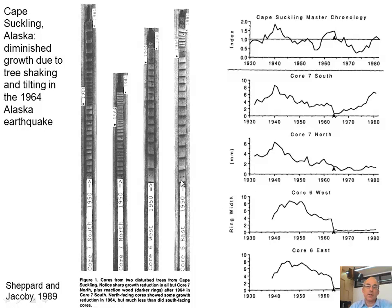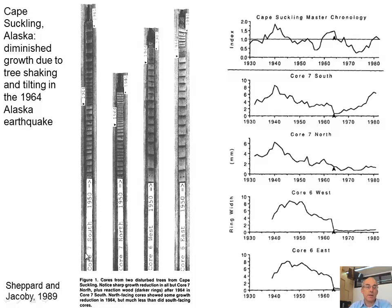The tree rings appear as light and dark bands. The light bands represent rapid growth put on each year, and the dark bands represent times when the tree is more dormant. The inner part of the core represents the older part — around 1950 in this case. As you go toward the edge of the tree, you see a real shortening of the ring width in three of the cores, right at 1964 when the earthquake occurred.